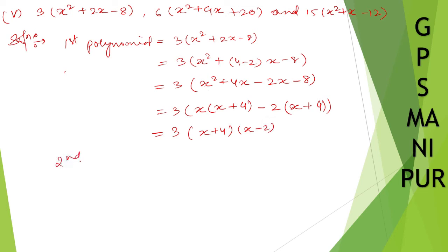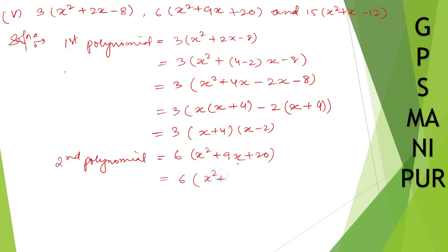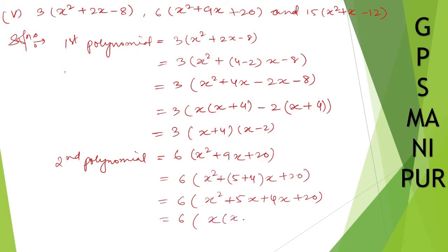The second polynomial is 6x² + 9x + 20. Splitting the middle term: 5 + 4 = 9, and 5 × 4 = 20. So we write 6x² + 5x + 4x + 20. Taking x common gives x(6x + 5), and taking 4 common gives 4(x + 5). So the second polynomial factors as (6x + 5)(x + 4).